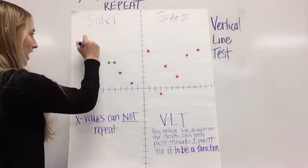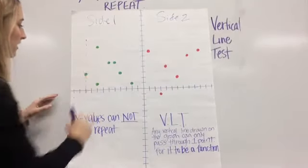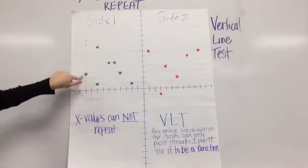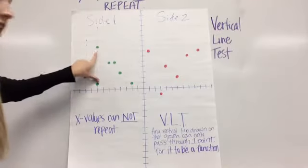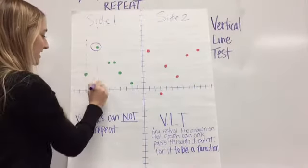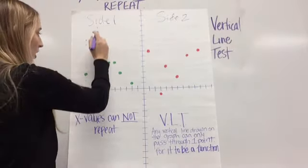Okay? So I'm going to draw some vertical lines just using dashes. Okay, I only went through one point. That's good. Draw some more. Oh, I hit two points there. That means this is not a function already.